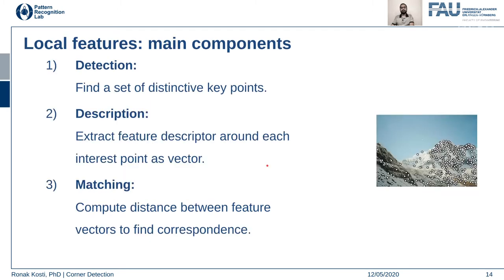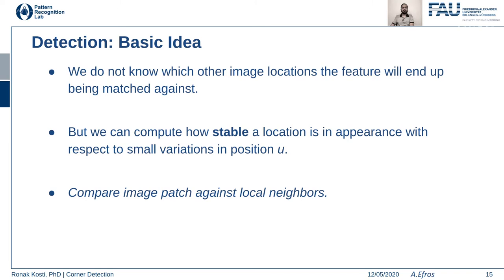Local features have three main components: first you detect them, then you describe them by finding a way to represent those descriptors — in the form of a vector or matrix — and then you match these features across different image views.